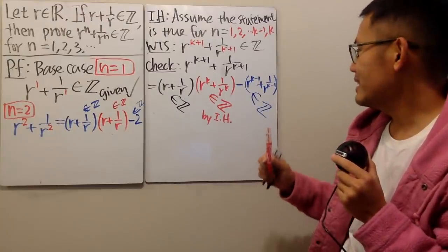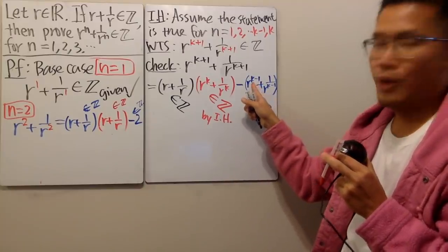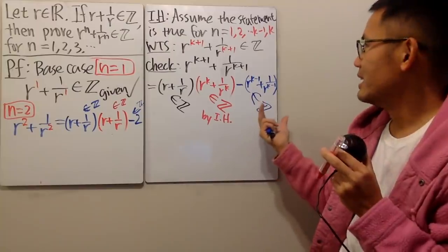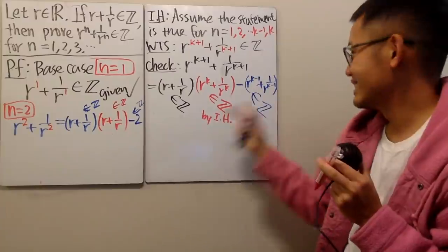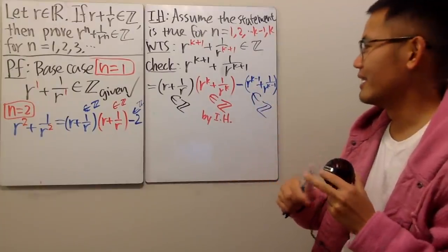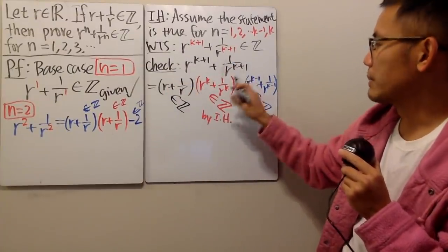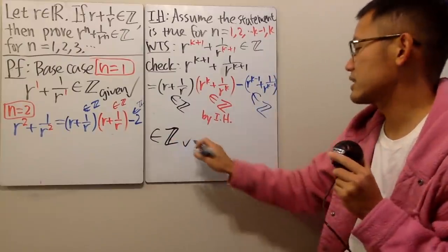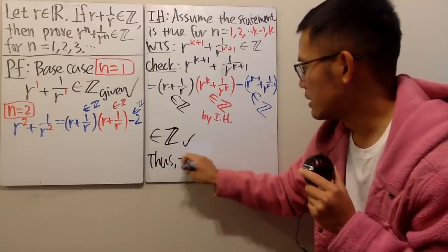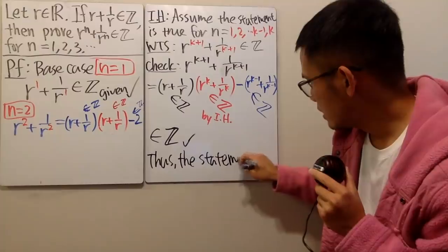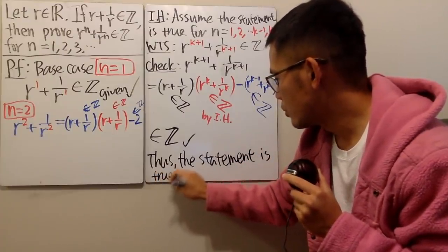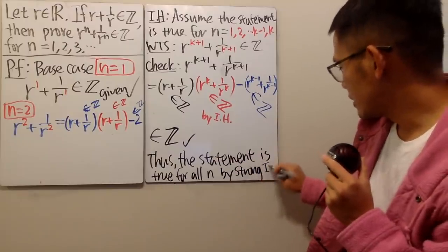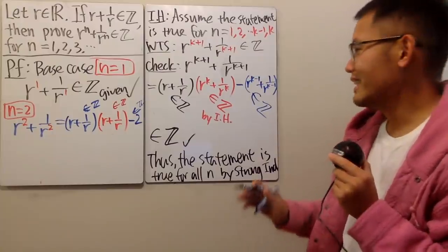However, there's one small thing: if k equal to 1, then r to the k minus 1 plus 1 over r to the k minus 1 is just 1 plus 1 over 1, so it's not really the inductive hypothesis — it's just algebra. But anyway, this should be clear. Because this is an integer, that's an integer, we subtract another integer — all in all this right here is an integer. So the statement is true for all n by the strong induction.